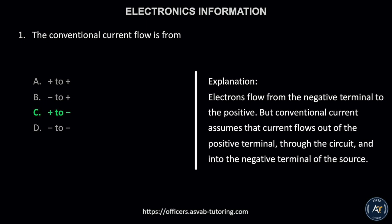The correct answer is letter C, positive to negative. This is because electrons flow from the negative terminal to the positive. But conventional current assumes that current flows out of the positive terminal, through the circuit, and into the negative terminal of the source.